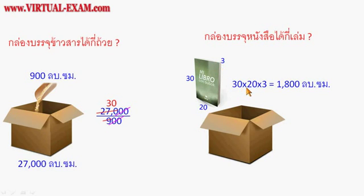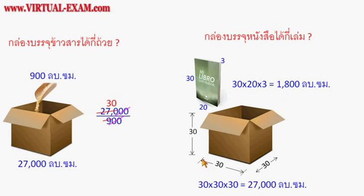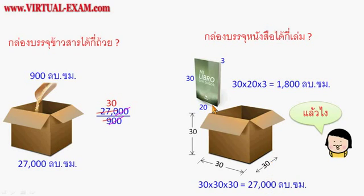ปริมาตรของกล่องคือ กว้าง คูณ ยาว คูณ หนา ถ้าโจทย์ให้ขนาดของกล่อง 30 cm กว้าง 30 cm ยาว 30 cm จะได้ 30 × 30 × 30 = 27,000 ลูกบาศก์เซนติเมตร การจัดหนังสือลงกล่อง จะต้องตัดสินใจว่าจะเอาด้านไหนลง (Volume of box = width × length × height. If the box is 30 cm × 30 cm × 30 cm, volume = 27,000 cubic cm. When placing items in the box, you must decide which face goes down.)